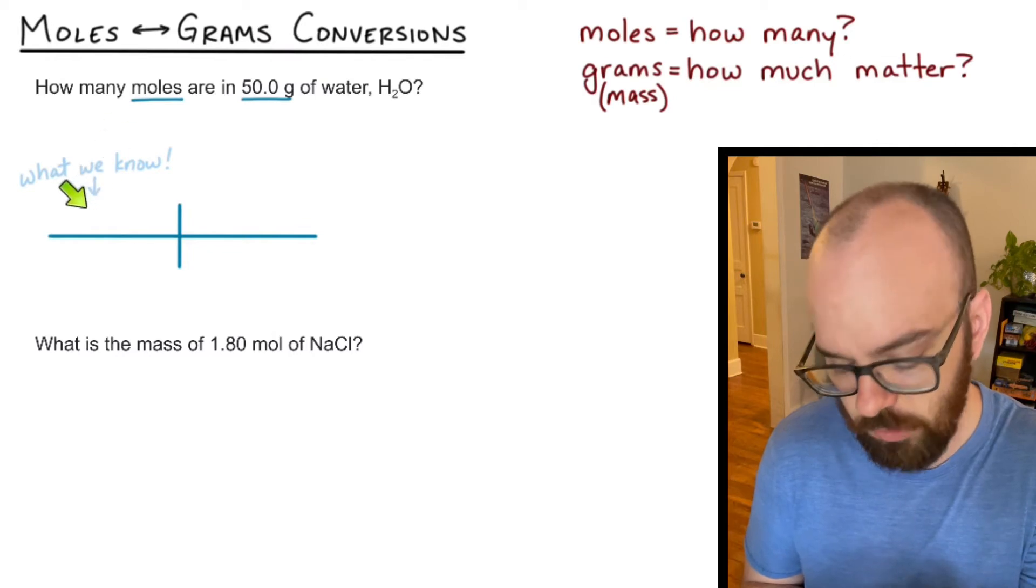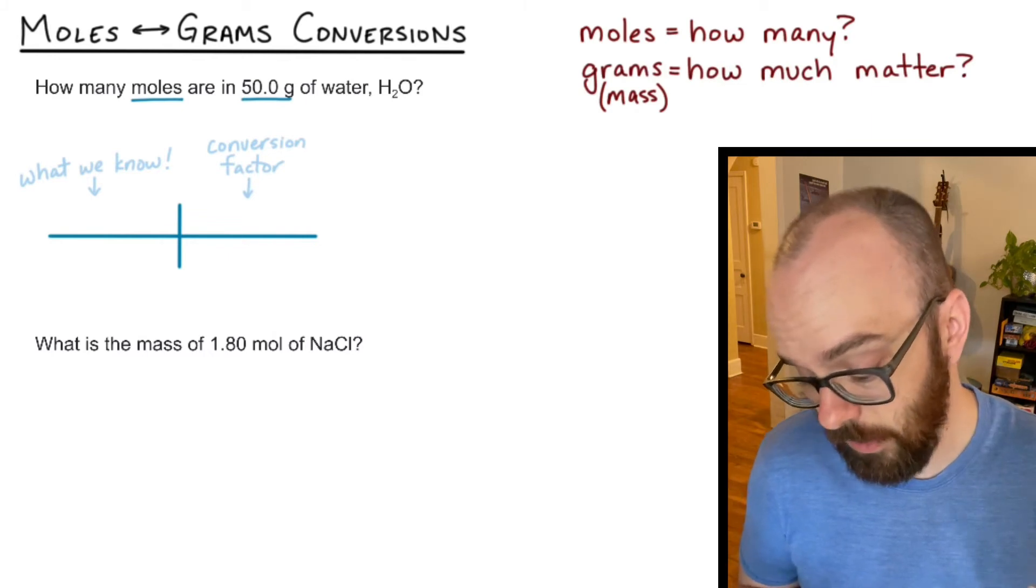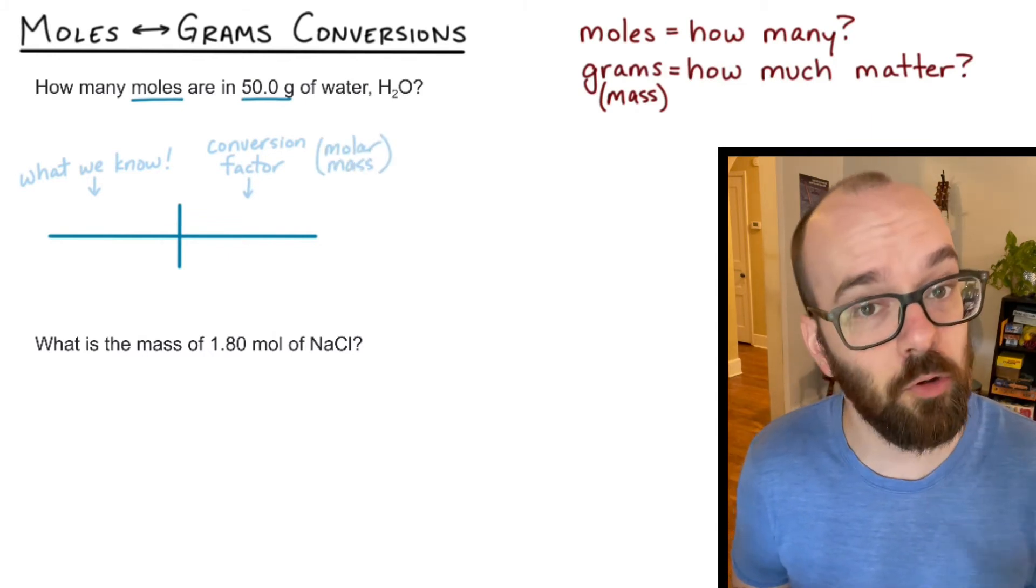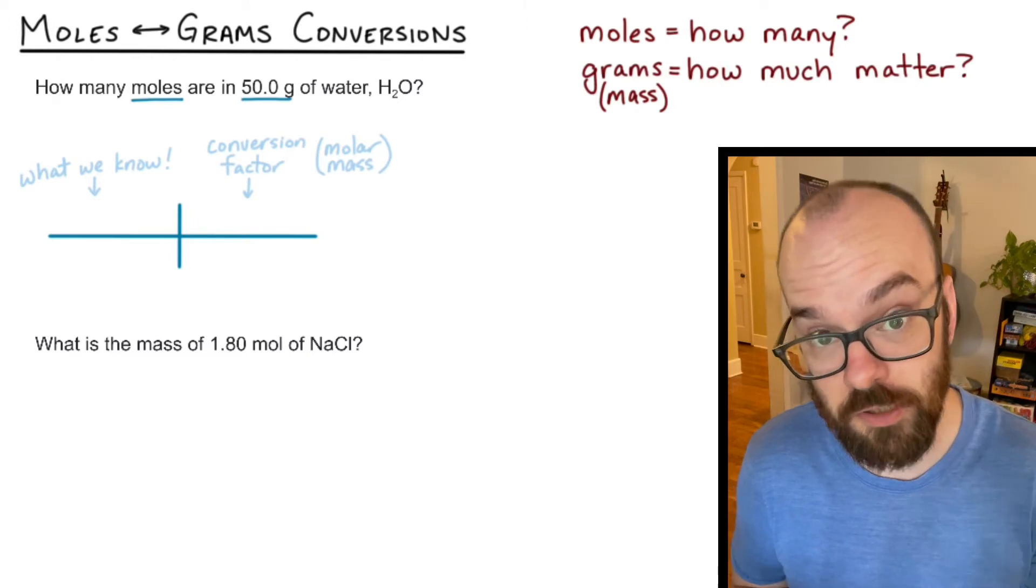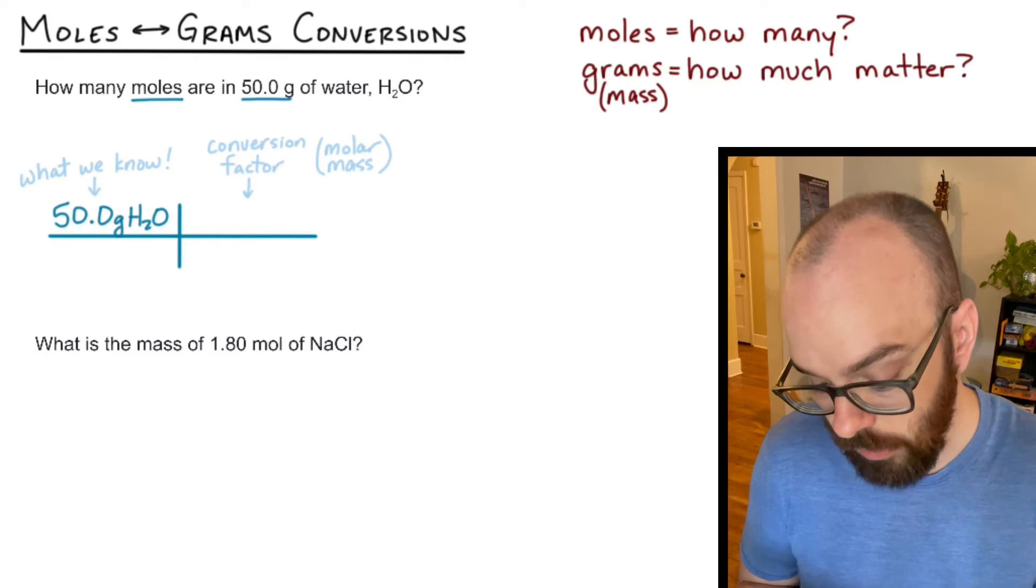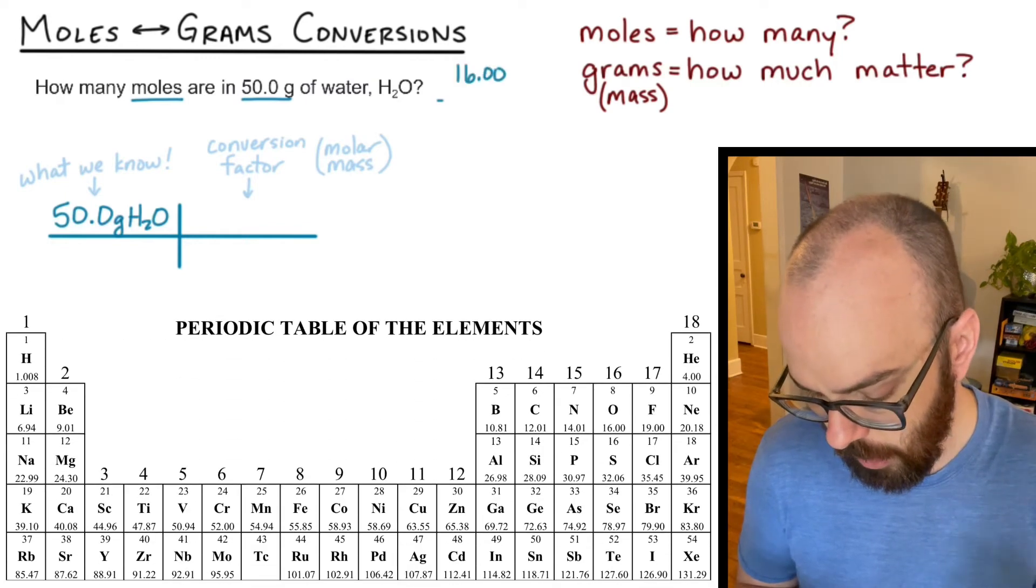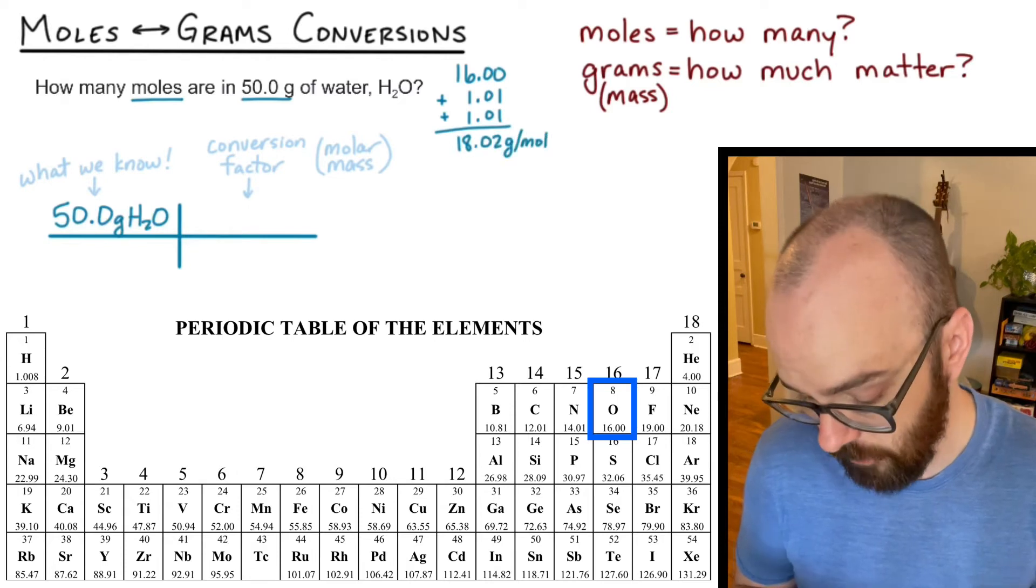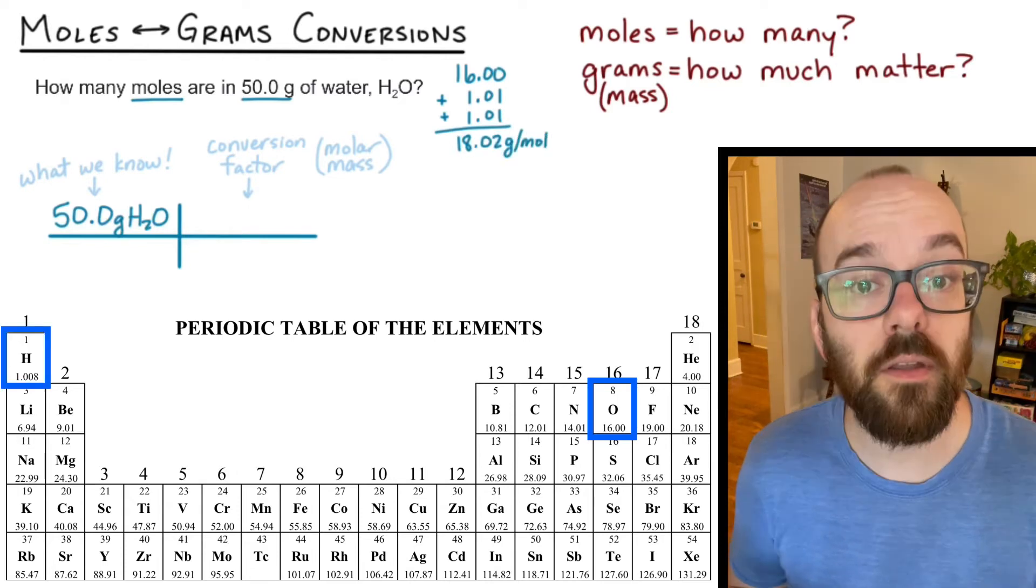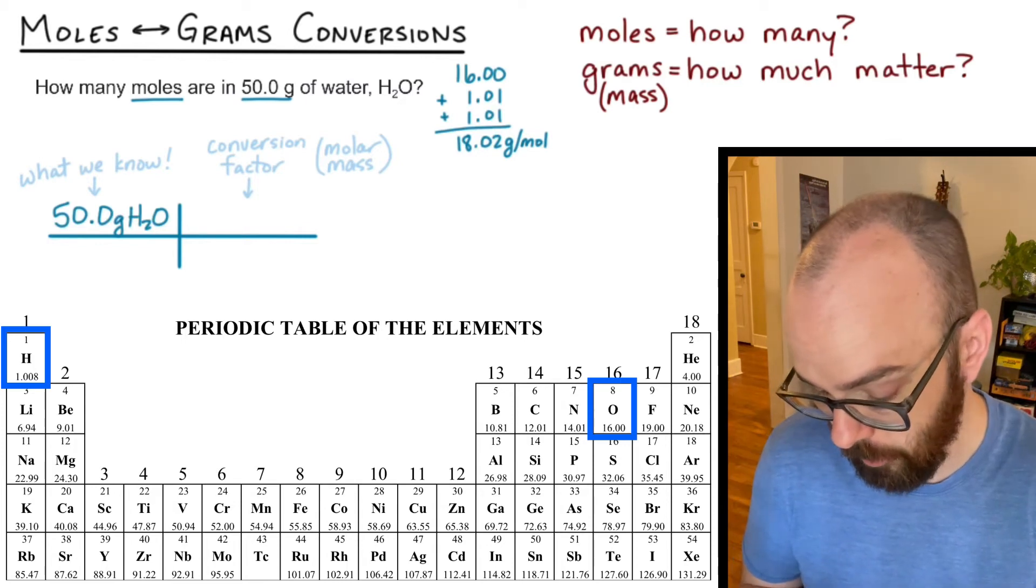So what we know, we'll start there with the 50.0 grams of water. And then in the second part of that is always going to be our conversion factor. In this case, the conversion factor is going to be the molar mass, which we'll find from the periodic table in just a moment. So the 50.0 grams of H2O is what we know, our conversion factor is the molar mass. Let's look this up on the periodic table. 16 is the molar mass of oxygen, 1.01 for hydrogen, and we have two of those. So when I add those all together, I get a total molar mass of water, which is 18.02 grams per mole.